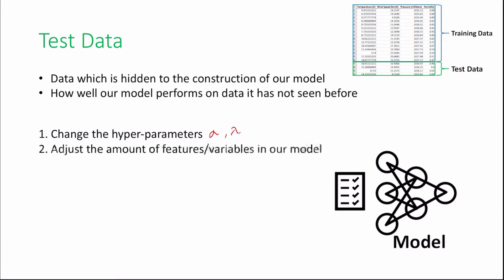We can also adjust the amount of features or variables in our model. If we found out that our model is performing poorly on our test data, this is a strong indication that our model is either overfitting or underfitting our data and adjusting the amount of features or variables can help resolve this issue.